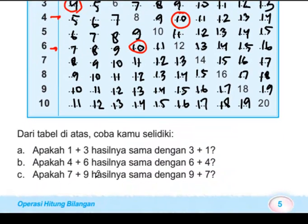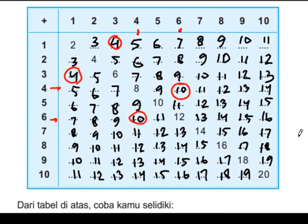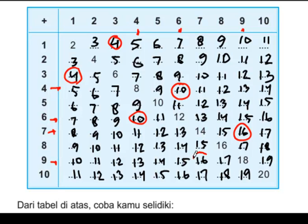Tujuh ditambah sembilan, apakah hasilnya sama dengan sembilan ditambah tujuh? Tujuh ditambah sembilan hasilnya enam belas. Sekarang kalau sembilan ditambah tujuh, maka hasilnya juga enam belas. Ternyata sama.